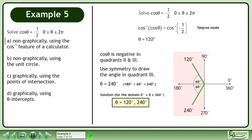The solution over the domain where theta is between 0 and 360 degrees is 120 and 240 degrees. Or, using radians, 2 pi over 3 and 4 pi over 3.